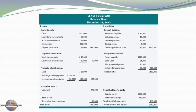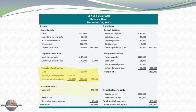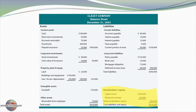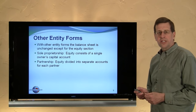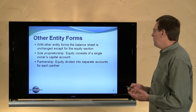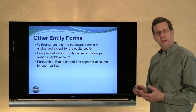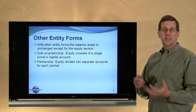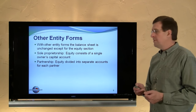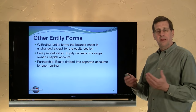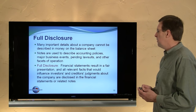Here is an example of a classified balance sheet for Classy Company. You can see the current assets section followed by long-term investments, property plant and equipment, intangible assets, and finally other assets. Then the liability section includes current liabilities and long-term liabilities, followed by the equity section. The equity section could look entirely different for a partnership or sole proprietorship — a sole proprietorship might have a single capital account reflecting amounts invested as well as amounts earned that have not been distributed, while a partnership would have a capital account for each particular partner.